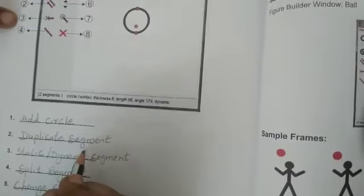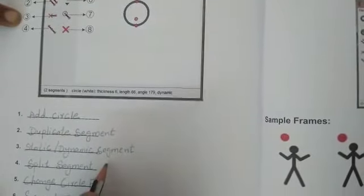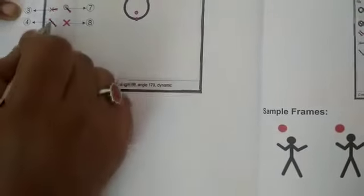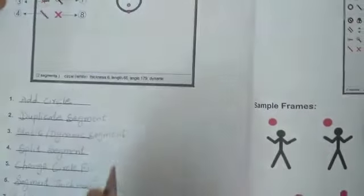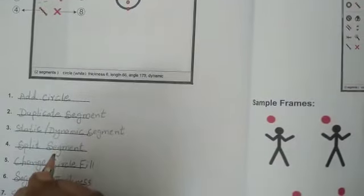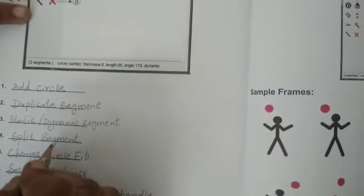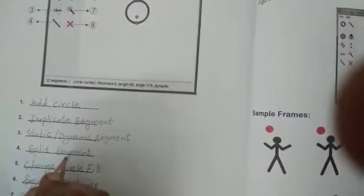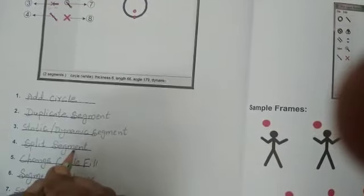And third one you can see, this is known as static segment. Static or dynamic segment. What is this tool known as? This is known as static and dynamic segment. Fourth one, this is known as split segment.